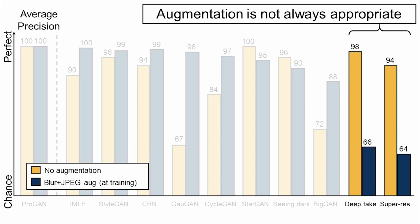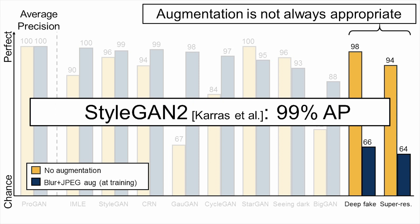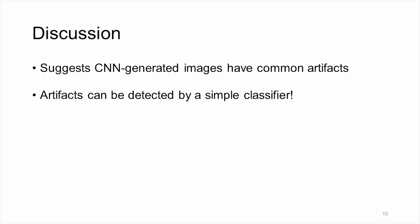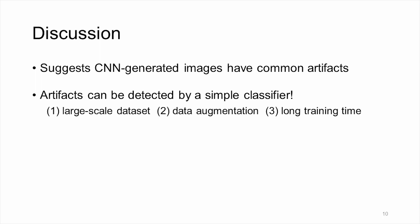Despite this, we observed a surprising amount of generalization across architectures. In fact, we had the chance to test our future model hypothesis. As StyleGAN2 was recently released, we tested our detector on it and found that our model generalizes well to this new model with 99% average precision. Our work suggests that CNN-generated images have underlying common artifacts, and they can be exploited by a simple classifier. The key ingredients are a large-scale training dataset, appropriate data augmentations, and long training time.